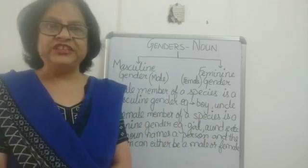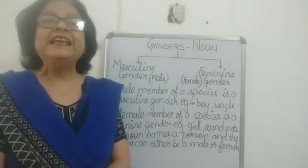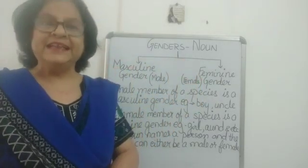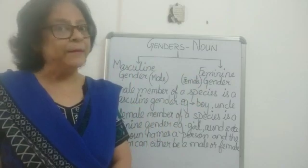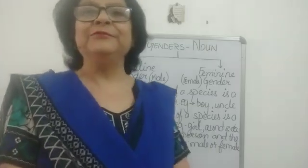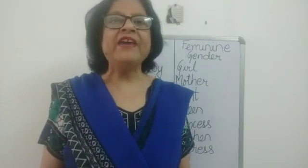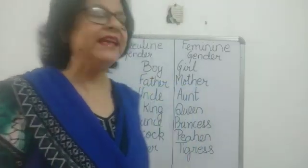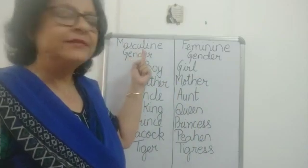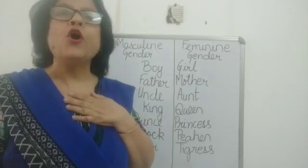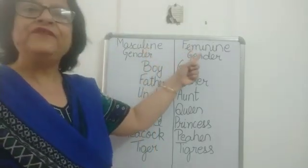So now we know that genders are of two types: the male gender and the female gender. Since they are male and female genders, they are also known as nouns. Till now I have explained the definition of male gender and female gender. Now I would like to give you some examples of the masculine gender and the feminine gender.